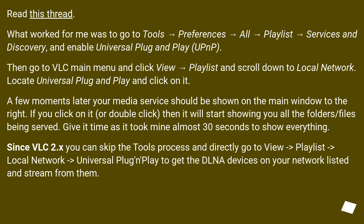Since VLC 2.x you can skip the tools process and directly go to View > Playlist > Local Network > Universal Plug & Play to get the DLNA devices on your network listed and stream from them.